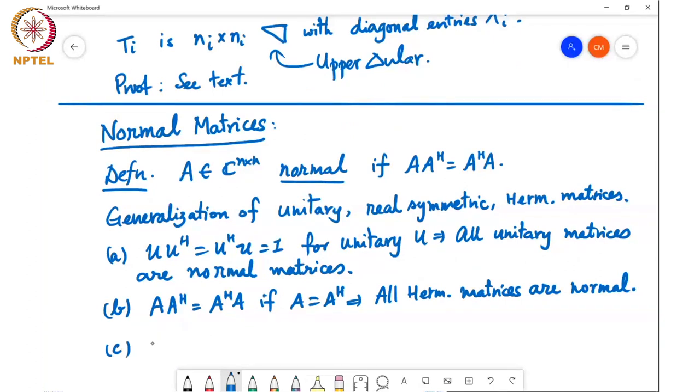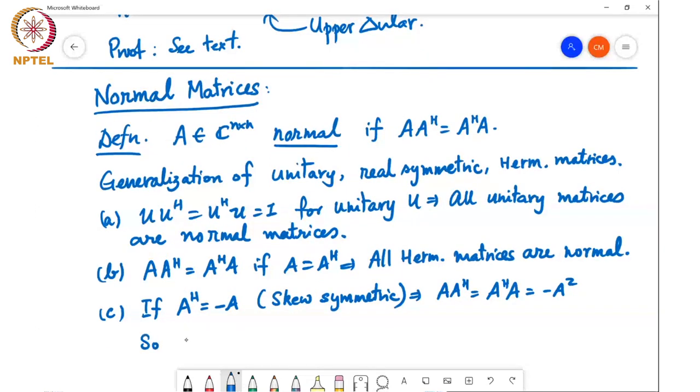Also, if A Hermitian equals minus A, and such matrices are called skew symmetric or skew Hermitian, then AA Hermitian equals A Hermitian A, which is equal to minus A square. So, skew symmetric matrices are normal.